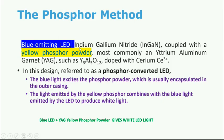The phosphor method of generating white light uses a blue-emitting LED made of indium gallium nitride (InGaN) coupled with a yellow phosphor powder. This yellow phosphor powder is called YAG — Yttrium Aluminium Garnet — doped with cerium, written as YAG:Ce+. The blue LED combined with the yellow phosphor generates white light.